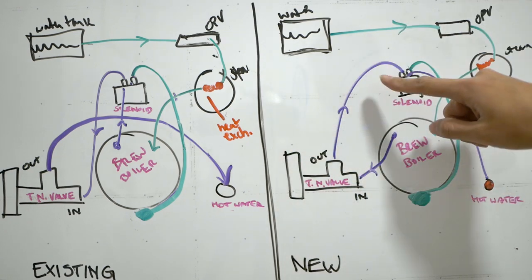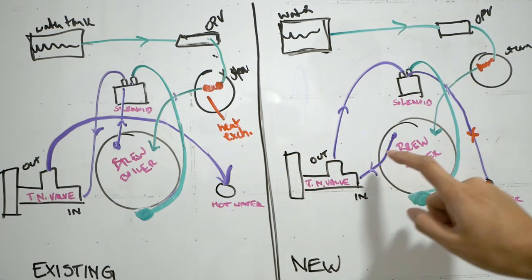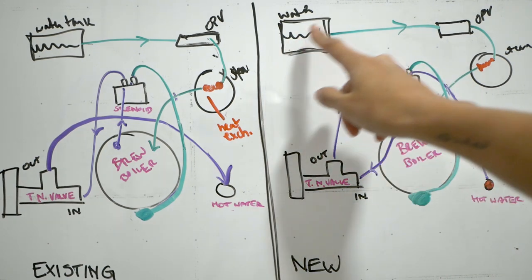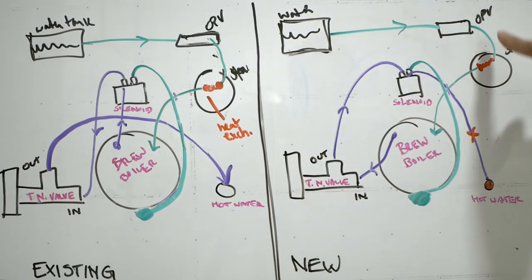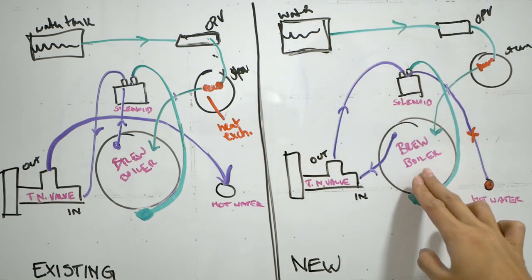Now, with the new tubing, what we've done is we've played with the tubes that you see in purple. These three tubes is what we've changed and moved around. The beginning parts are the same. The water will go from the water tank to the OPV steam boiler via a tube where it will get heated up and then go into the brew boiler. That remains the same.